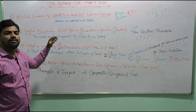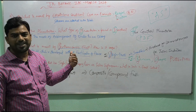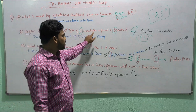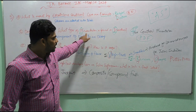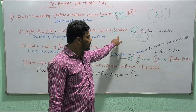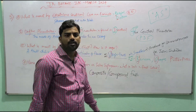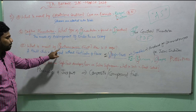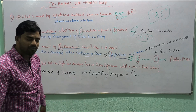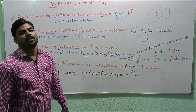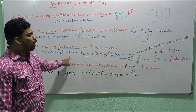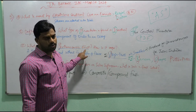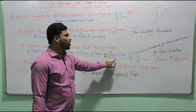Question 2: Define placentation. The mode of arrangement of ovules in an ovary of a flower is known as placentation. What type of placentation is found in Dianthus? Placentation in Dianthus is free central placentation. Mnemonic: PDF. Question 3: What is meant by parthenocarpic fruit? A fruit which is developed in a flower without fertilization is called a parthenocarpic fruit, also known as virgin fruit.